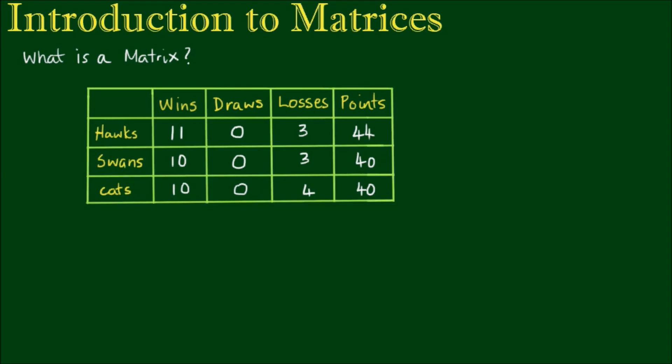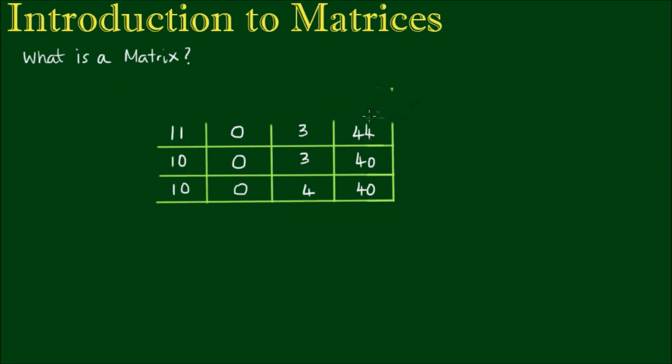In this Premiership ladder, the numbers are all of the data in this table. The header row and header column index all of that data. If we take all of this information away, we simply end up with a rectangular or two-dimensional array of numbers. And this is essentially what a matrix is.